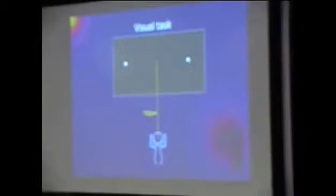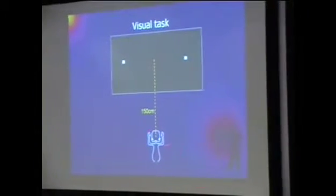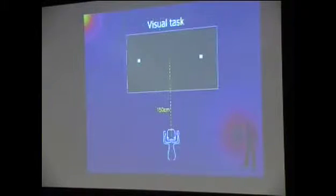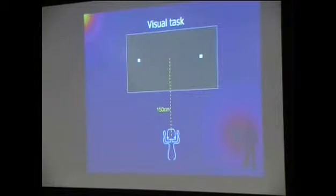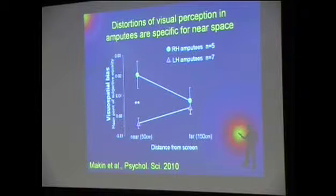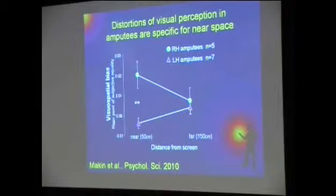We're doing the same experiment with the same subjects, but now we place the amputees well away from the screen — they're sitting 150cm from the screen. In this task, everything is completely identical to the previous task. The only difference is the physical distance between the subject and the screen, so the targets are now outside of action space. What we found was that when the same task was performed in far space, there were no differences in performance between people that had lost their right hand and left hand.